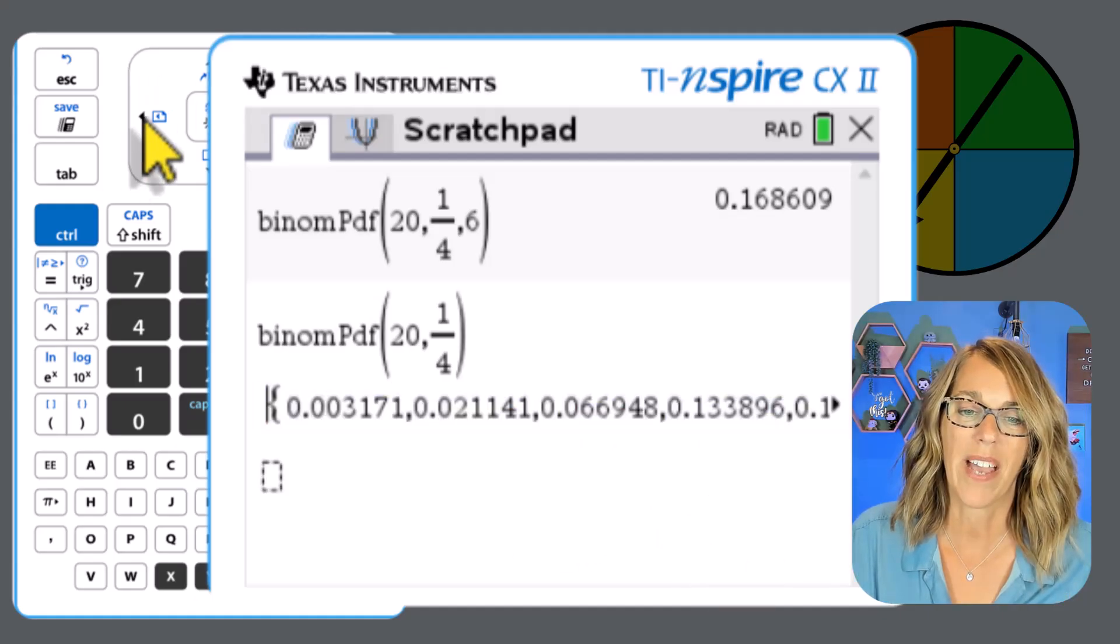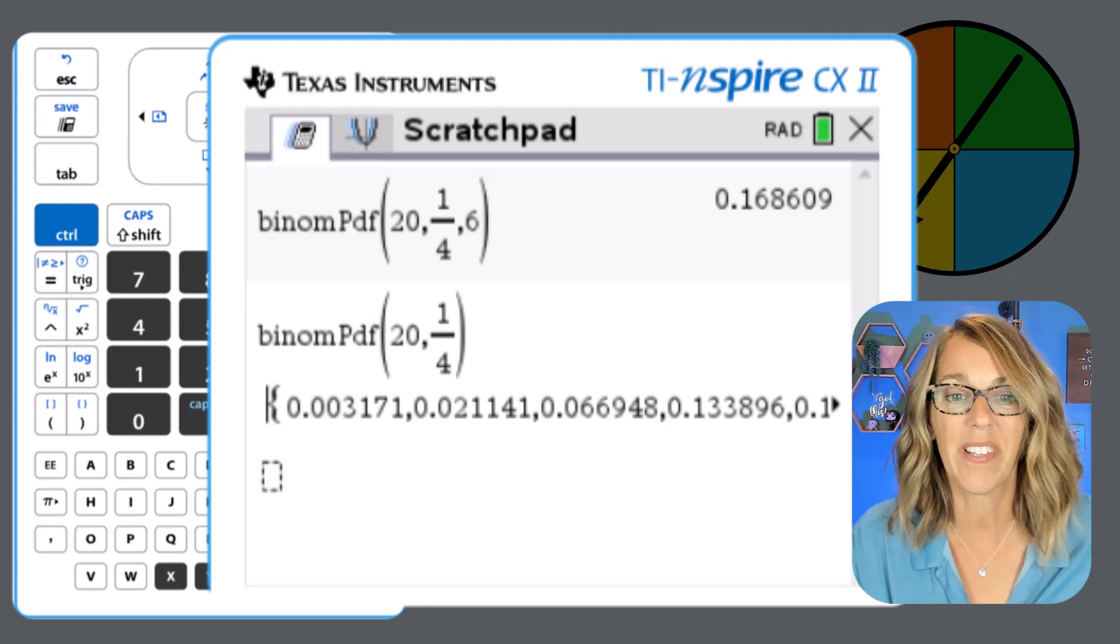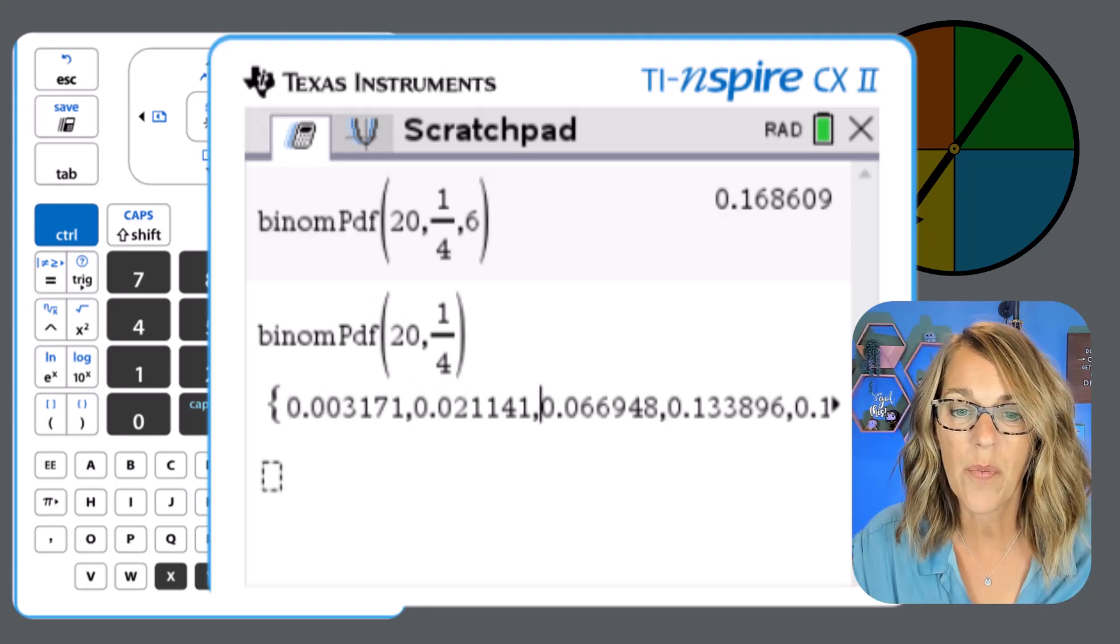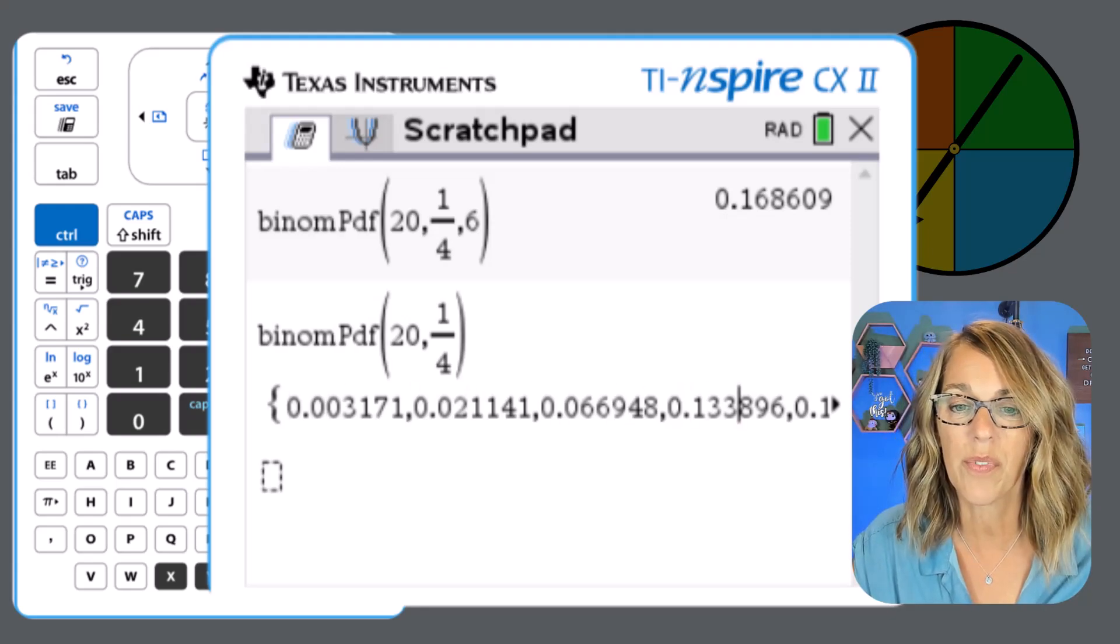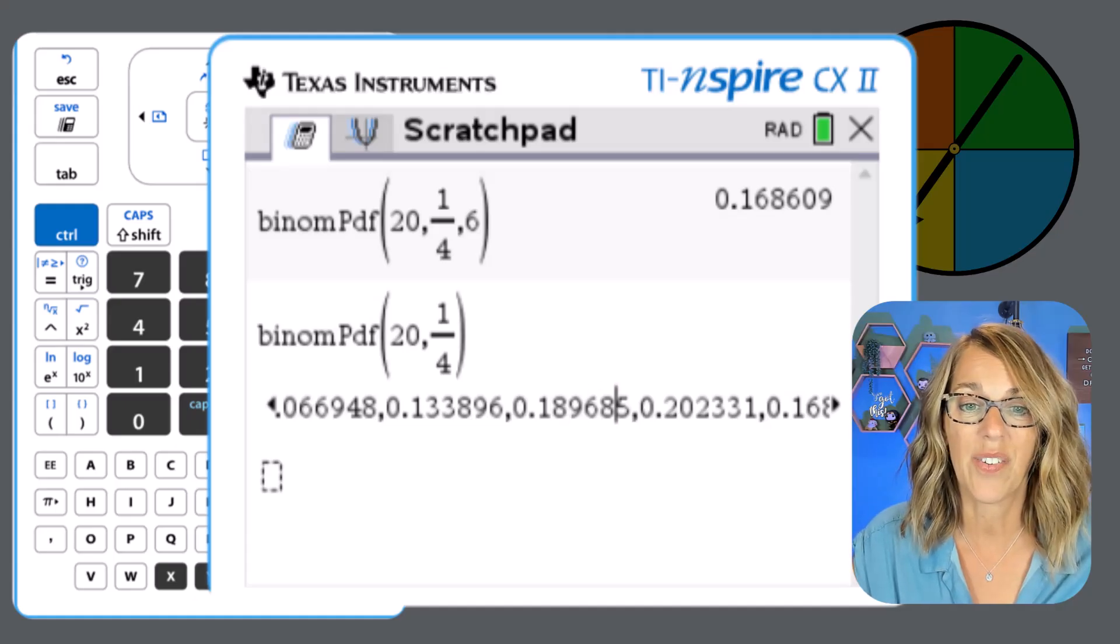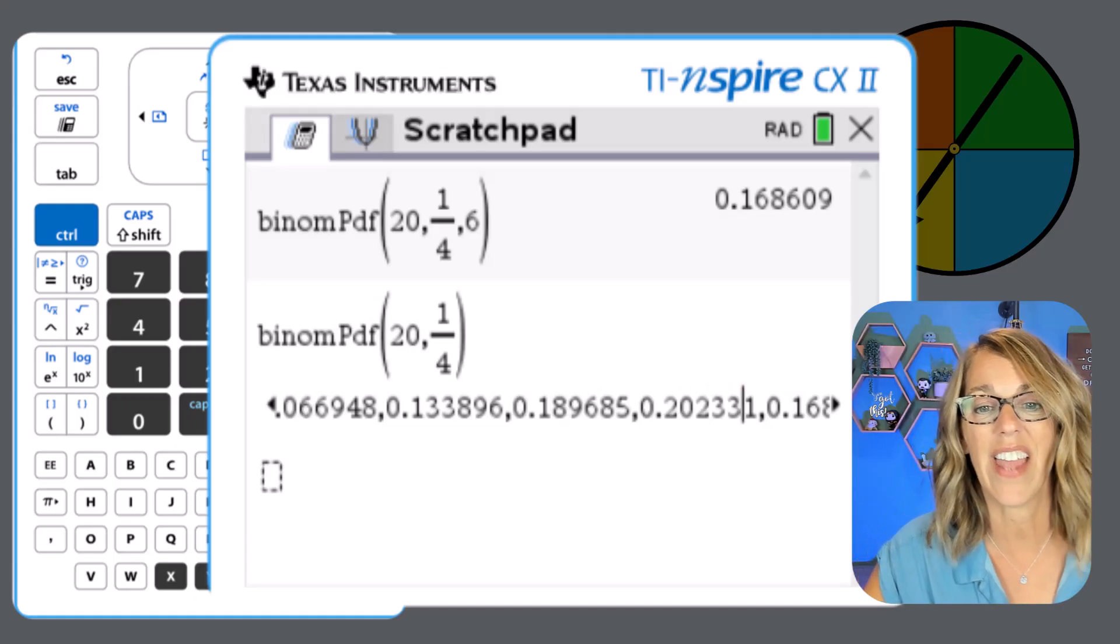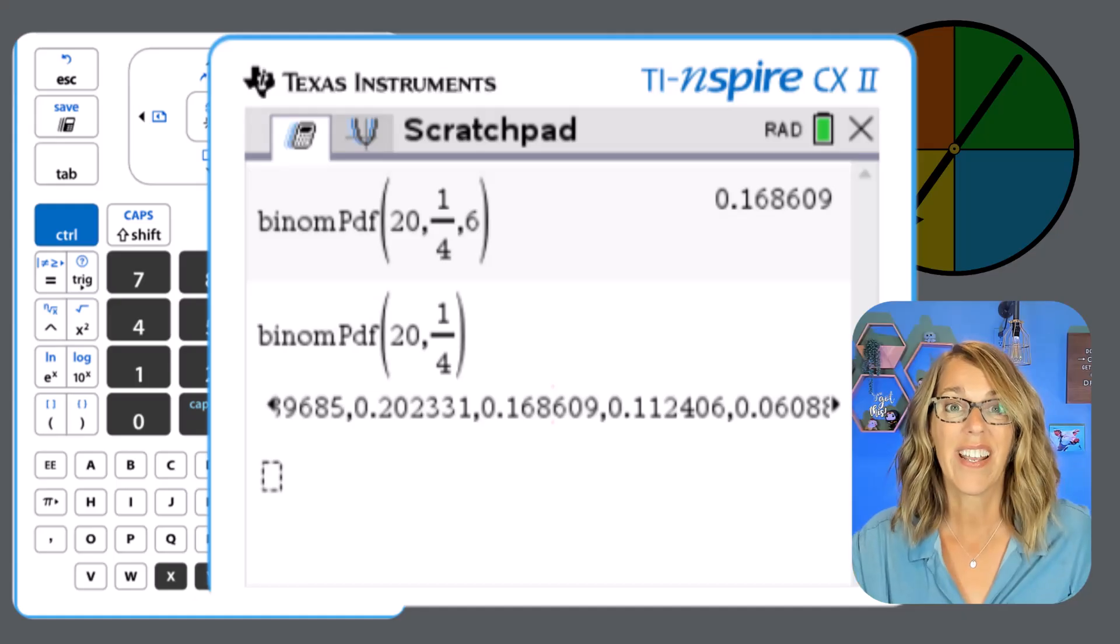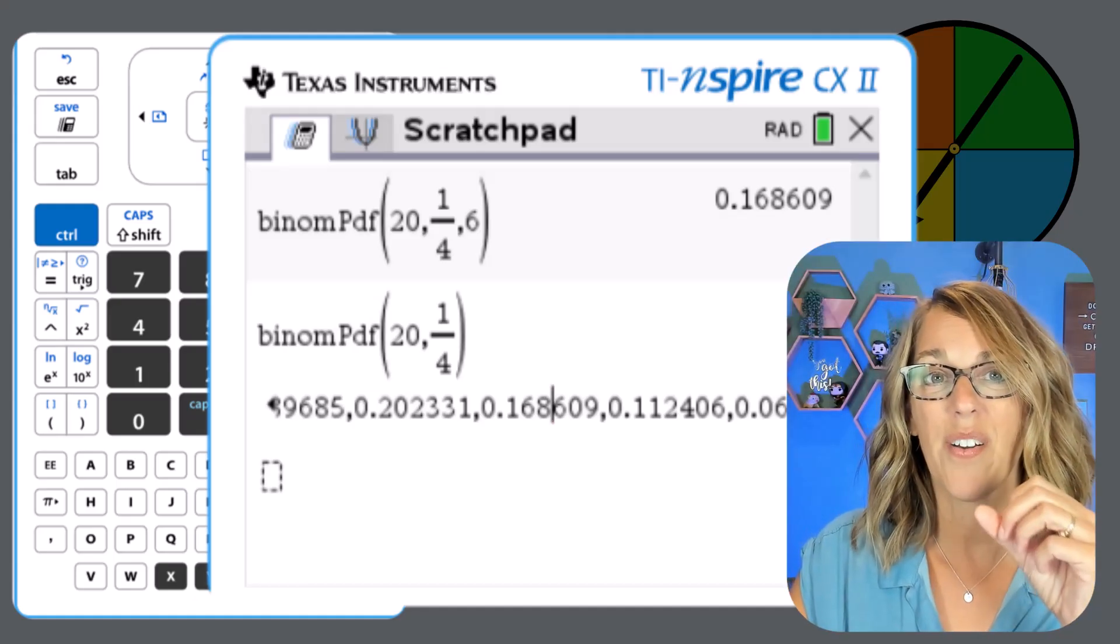So if I arrow up, I'm just going to back arrow here, then I can find the probability of four. This is zero, one, two, three, and the next number is going to be four. And then I can add that to the probability of five, and then add that to the probability of six, not the easiest way to go.